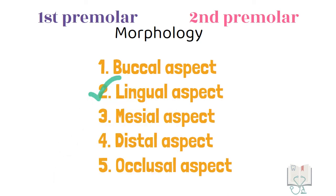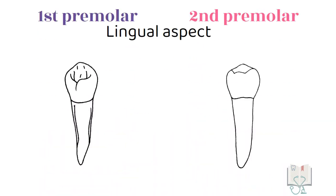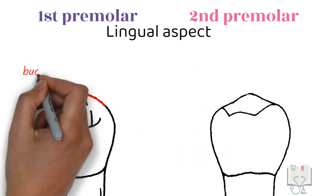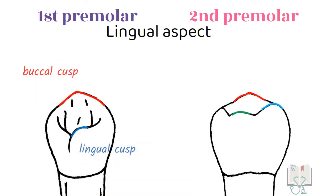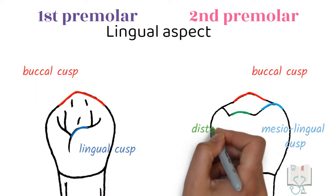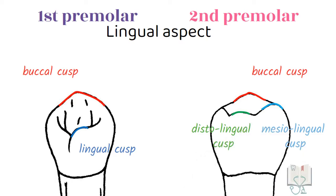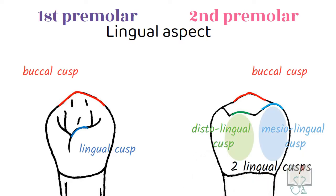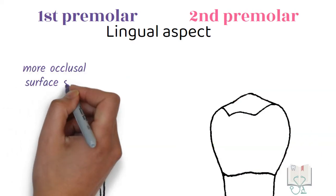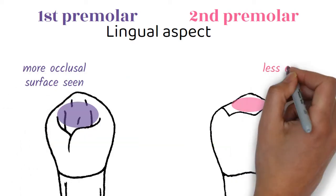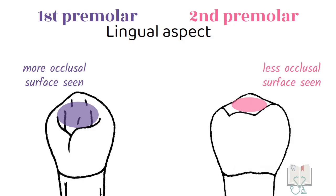Next, the lingual aspect. From the lingual aspect, all cusps are visible. In the first premolar, the buccal cusp and lingual cusp are seen, while in the second premolar, the buccal cusp, mesolingual cusp, and distolingual cusp are visible. So in the second premolar there are two lingual cusps, and in the first premolar there is one lingual cusp, which is smaller and narrower. Because of this, in the first premolar more of the occlusal surface is visible compared to the second premolar.